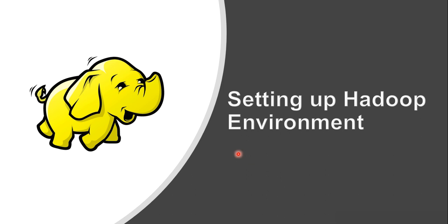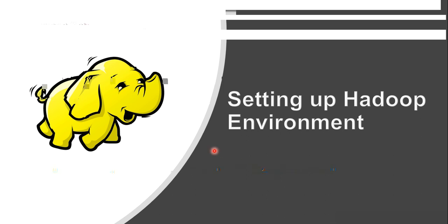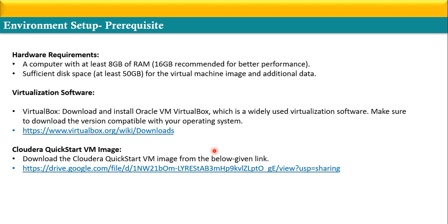The first requirement is with respect to hardware. If you want to use Cloudera Quickstart VM on your machine, you need to have at least 8 GB of RAM. For better performance, 16 GB RAM is recommended. The second requirement is disk space — at least 50 GB of disk space should be available on your machine.